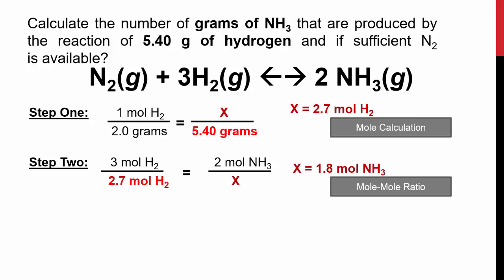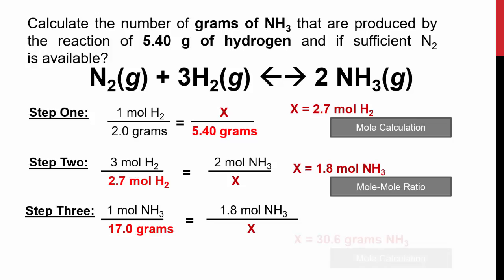The question, however, does not ask us for moles of ammonia. So we have to still do one more step. Step 3, now we use our mole calculations again to convert from moles of ammonia to grams of ammonia. We have 1 mole of NH3, which is always equal to 17.0 grams because that is its GFM. And we currently have 1.8 moles of NH3. We cross multiply and divide, we end up with 30.6 grams of NH3.